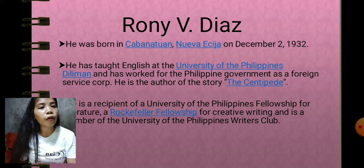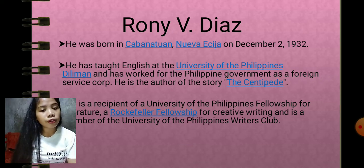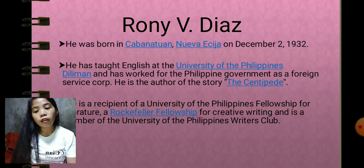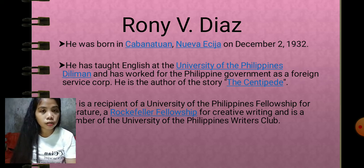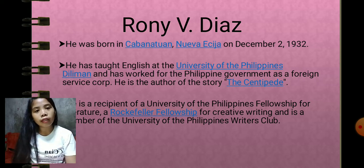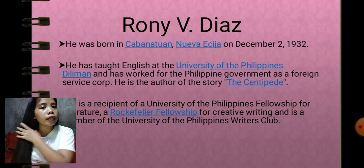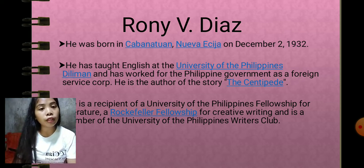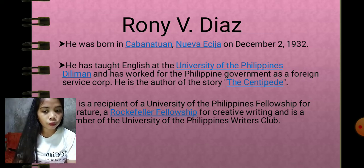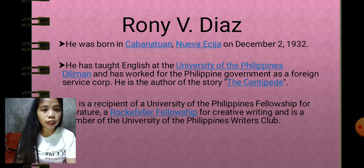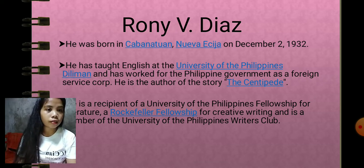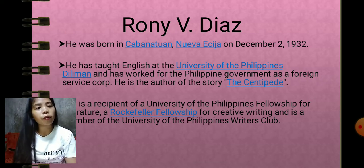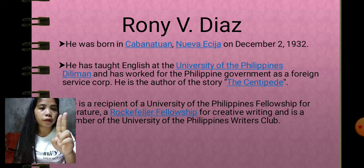Ronnie V. Diaz was born in Cabanatuan on December 2, 1932. He taught English at the University of the Philippines Diliman and worked for the Philippine government as a foreign service officer. He is the author of the story 'The Centipede,' which is about two siblings — a boy and a girl named Dahlia.